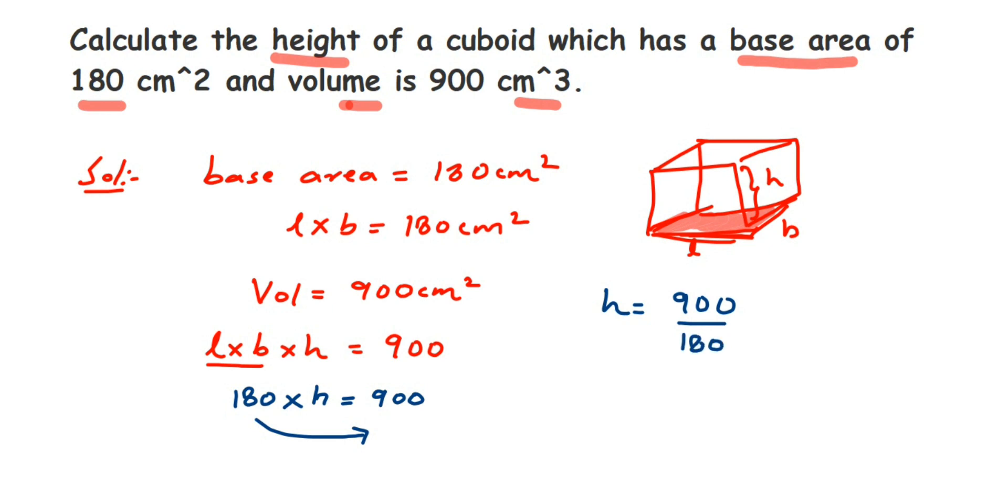We're going to cancel this. We're going to cancel the zeros first. Now here 9, 18, you can directly cancel in 18 table. If you want to cancel this in lower numbers like 2 and 3, you can go for that. You're going to get the same answer at the end. Here I'm going to directly cancel in 18 table. 18 ones are 18 and 18 fives are 90, so height will be equal to 5 centimeter.